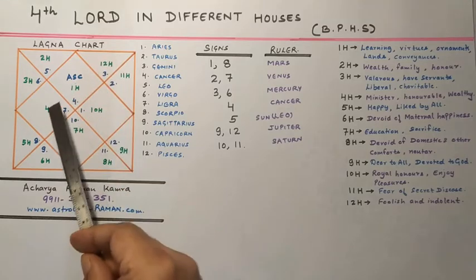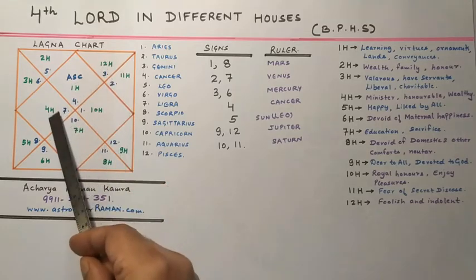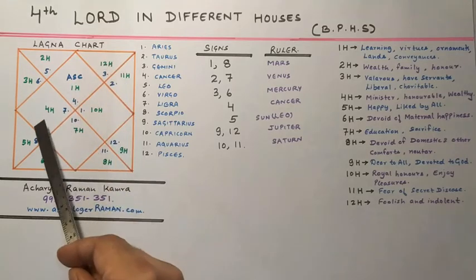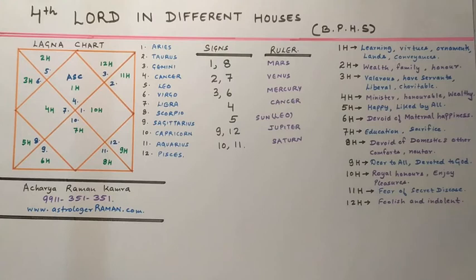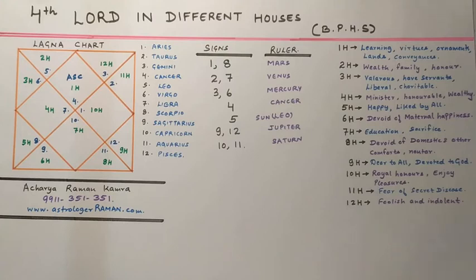Lastly, if the 4th lord be placed in the 12th house, the native will be devoid of domestic happiness and other comforts, will have vices, and would be foolish and indolent.